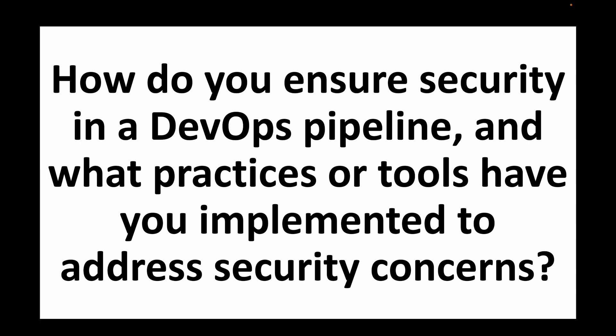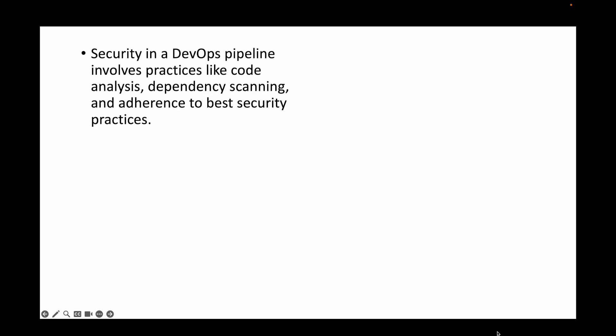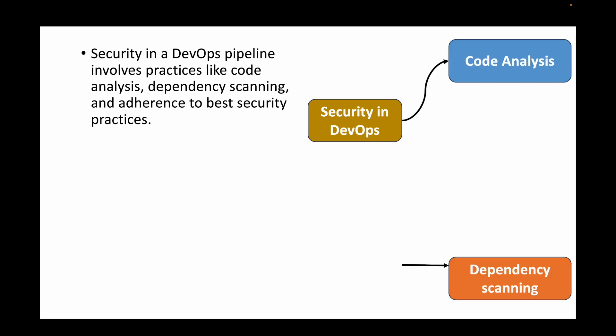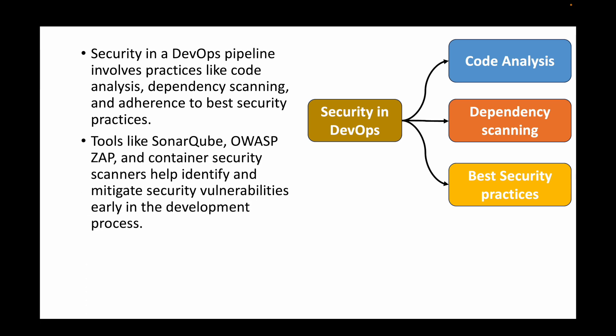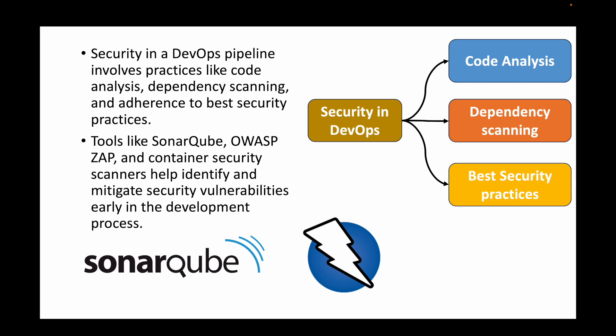The final question is: how do you ensure security in a DevOps pipeline and what practices or tools have you implemented to address security concerns? Security plays a very important role in the DevOps pipeline. Practices include code analysis, scanning dependencies, and adhering to best security practices. Tools include SonarQube for code analysis, container security scanners for dependency scanning, and OWASP ZAP for best security practices. There are different tools available to maintain security throughout the DevOps pipeline.